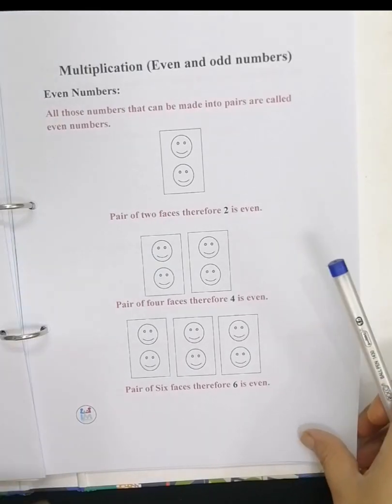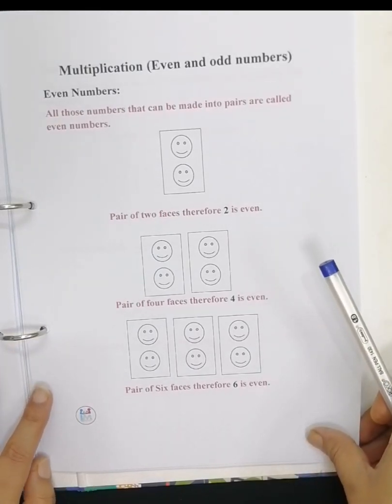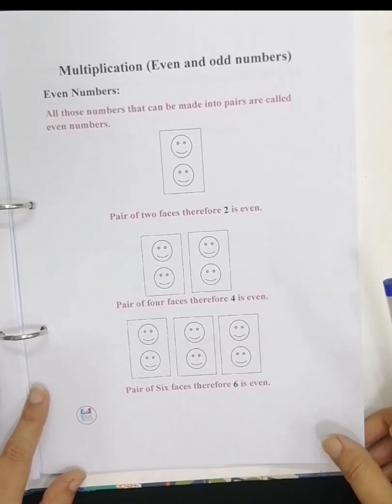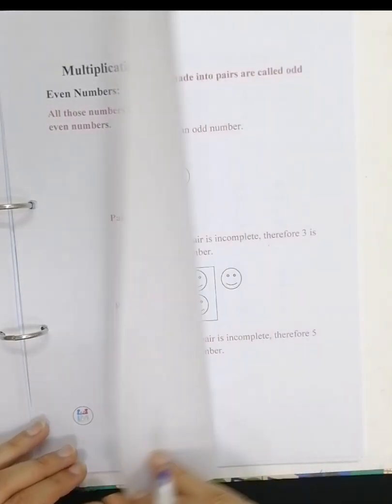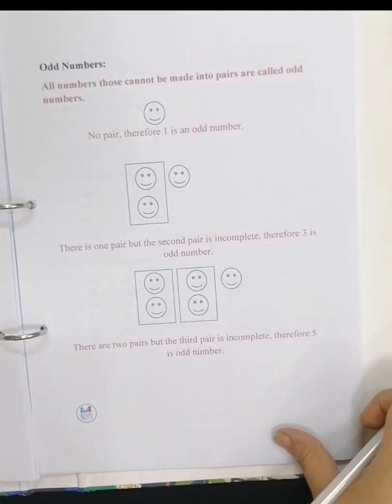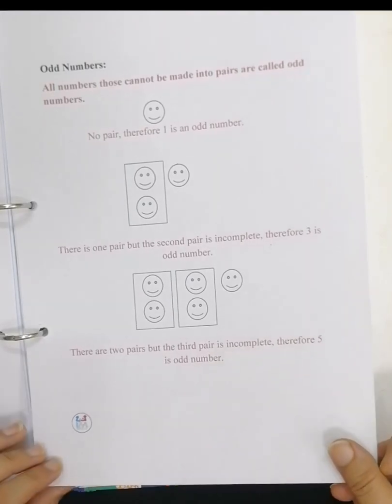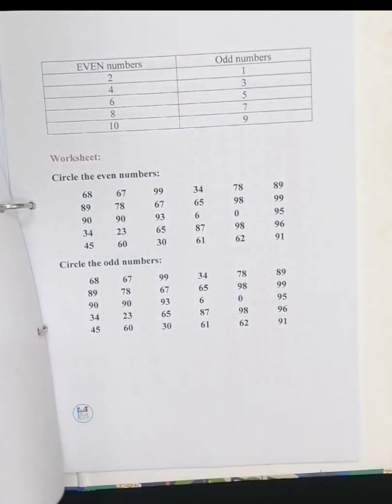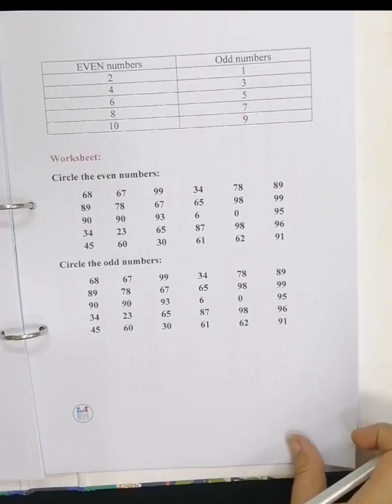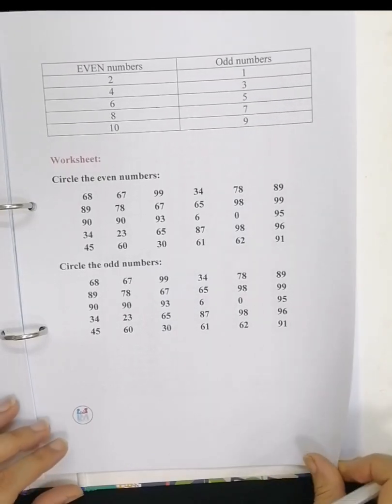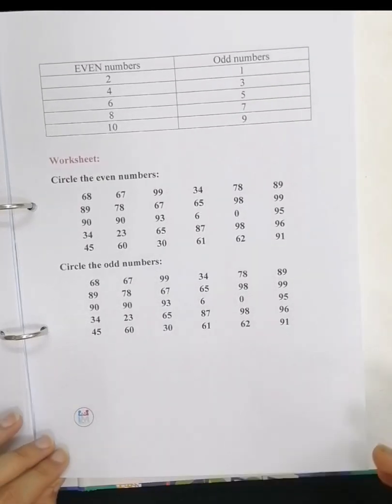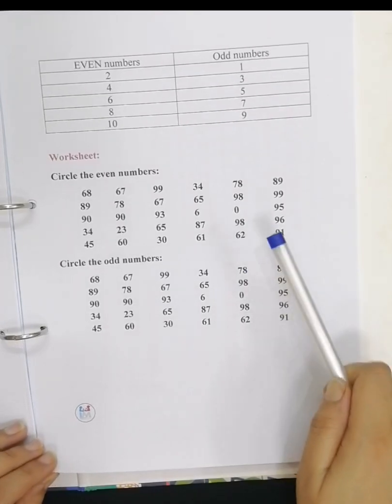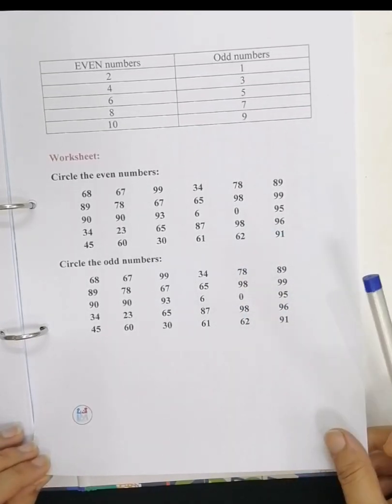And here multiplication, even and odd numbers. And odd number. Here worksheet is given so you can know your child has learned the even and odd numbers.